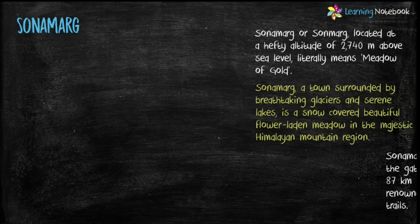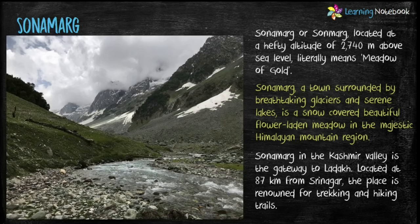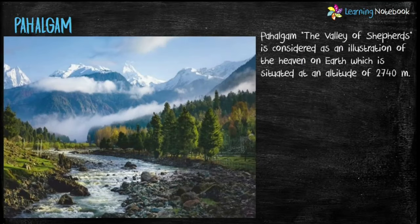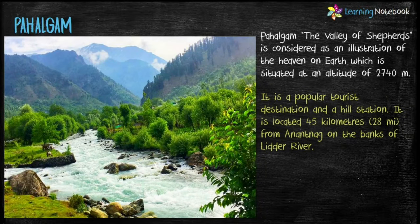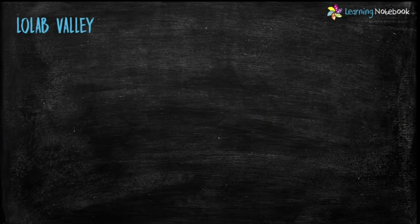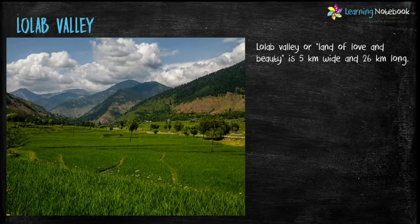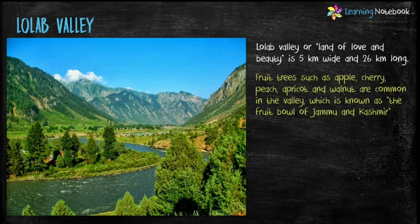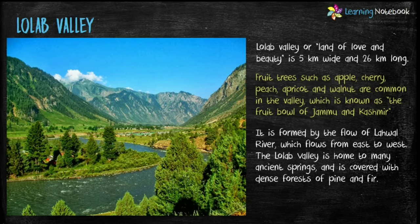Next place is Sonamarg, which means meadow of gold. It is a town surrounded by breathtaking glaciers and serene lakes, and it is a gateway to Ladakh. Next is Pahalgam, a popular tourist destination as well as a hill station, associated with the annual Amarnath Yatra. Next is Lolab Valley, also called the land of love and beauty, where one can find lots of fruit trees such as apple, cherry, peach, apricot, etc. Due to this it is also known as the fruit bowl of Jammu and Kashmir.